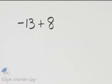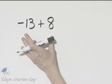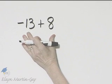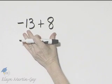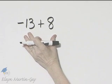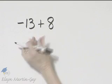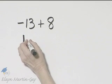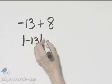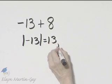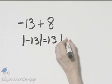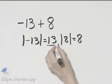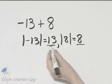Let's simplify this expression, and to do so we will add. Notice we're adding two numbers with unlike or different signs, so we subtract their absolute values. I'll go ahead and write that down. The absolute value of negative 13 is 13, and the absolute value of 8 is 8. So we now subtract their absolute values.